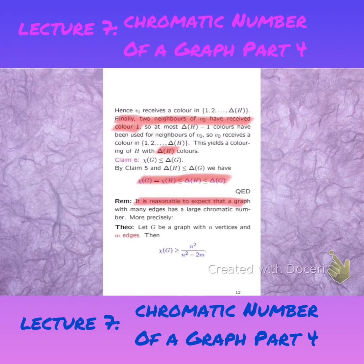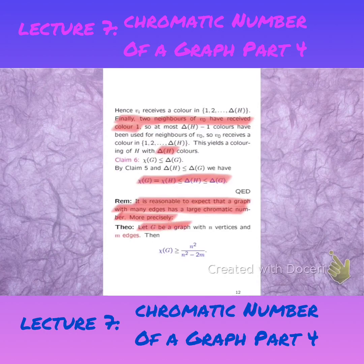It is reasonable to expect that a graph with many edges has a large chromatic number. The denser you make the graph G, it will definitely prevent you from using fewer colors. So there is a correlation between the density of a graph and the chromatic number. And that brings us to this theorem here, which states that you can actually find a lower bound for the chromatic number in terms of the size of a graph.